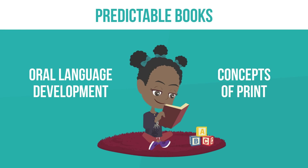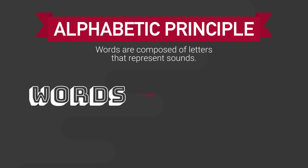For preschool children, predictable books are great for oral language development and can help young children learn concepts of print, such as the fact that print conveys a message decoded by the skilled reader, and directionality as the reader moves from front to back and left to right. These books do not, though, build word-level reading skills, as they do not direct students' attention to the alphabetic principle.